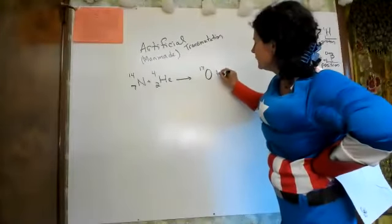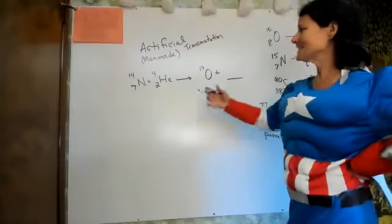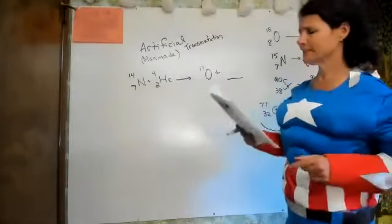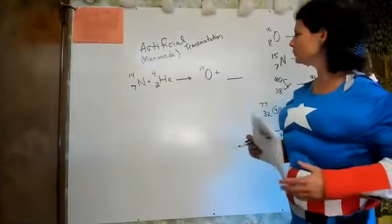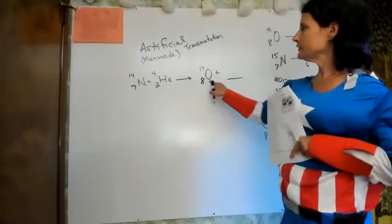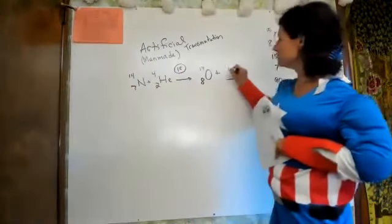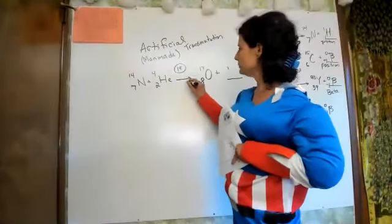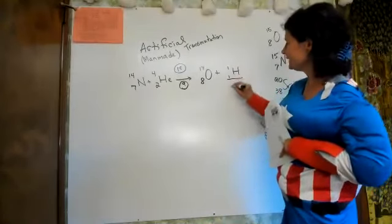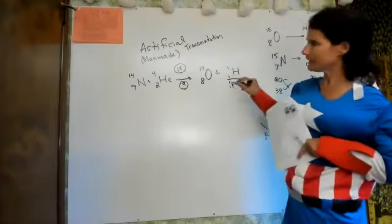Whenever they make something new, they usually get a little extra piece. Lawrence made the first collider. To balance: we need a total of 18 on top, so the missing number is one; total of nine on the bottom, so the other missing number is one. You can write H or P for proton — there's always an extra piece.